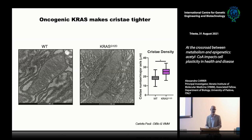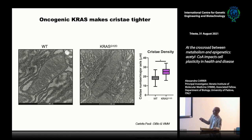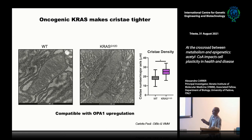In our quest to understand what happens to mitochondria when KRAS is mutated, we looked at a number of morphological and functional parameters. Long story short, not much is changing overall, but there is a very remarkable tightening of the mitochondrial cristae. A quick reminder: mitochondrial cristae are invaginations of the inner mitochondrial membrane that occupy the mitochondrial matrix and allocate the respiratory complexes. Generally speaking, the tighter the cristae, the more efficient mitochondrial respiration is — consistent with our previous data.